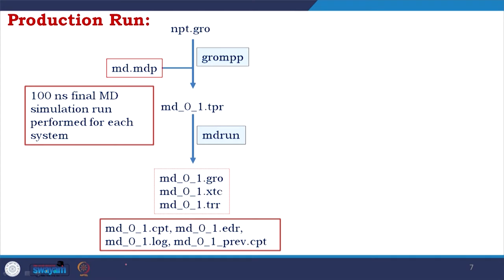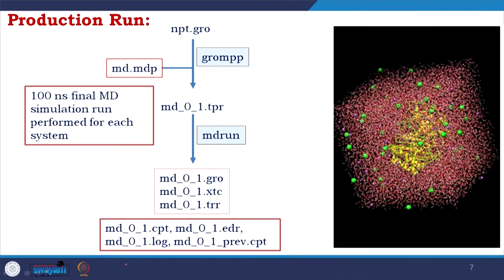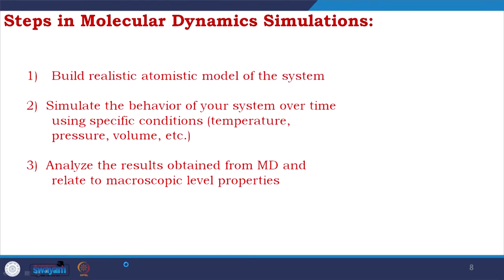After the production run we get so many snapshots which give us a movie — the end result of the MD simulation run. Coming back to the steps: building a realistic atomistic model is done, simulation with three steps (preparation, minimization/equilibration, and production run) is done. Now we have to analyze the results obtained from MD and relate them to macroscopic-level properties.